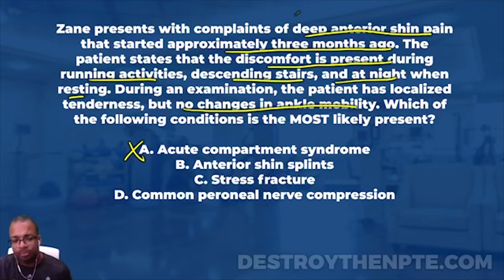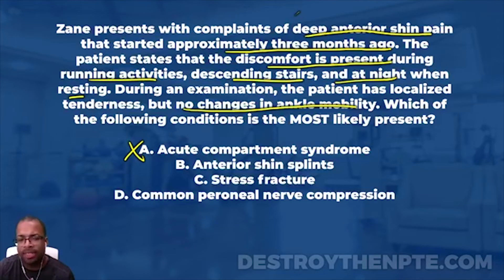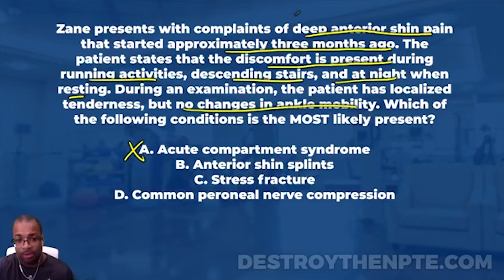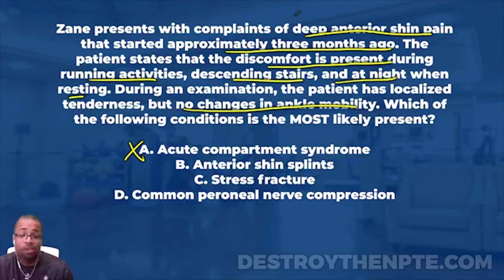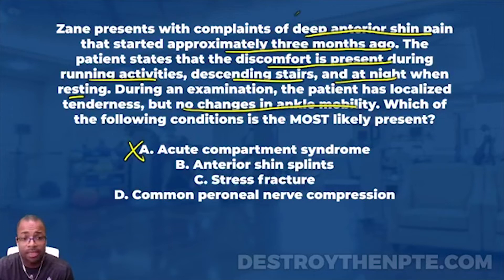B says anterior shin splints - a pretty common condition. We can have them on the posterior side of the leg but also on the anterior. If a patient has anterior shin splints, it's usually something repetitive - an overuse condition related to the anterior tibialis, overusing that muscle. You can get it from running or any activity calling for the anterior tib to do a lot of work. Is that consistent with the clinical picture? Well, the patient can have anterior shin pain with shin splints - that makes sense. Started three months ago - that makes sense. Discomfort during running - possibly.